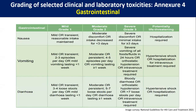For symptom grading: nausea that is mild or transient with reasonable intake maintained is grade 1. Grade 2 is moderate or intake decreased for less than 3 days. Grade 3 is severely discomforting or minimal intake for more than 3 days. Grade 4 — potentially life-threatening — means the patient cannot tolerate any food and needs hospitalization. Similarly, vomiting and diarrhea also have grading of 1, 2, 3, and 4. For dyspnea: grade 1 is dyspnea on exertion; grade 2 is dyspnea with normal activity; grade 3 is dyspnea at rest; and grade 4 is dyspnea requiring oxygen therapy.